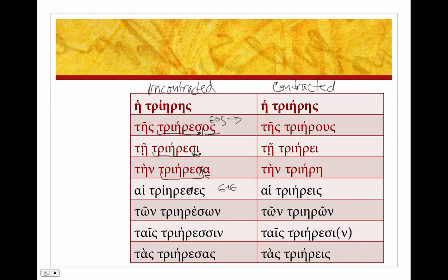For the genitive plural triereson: sigma drops out, and epsilon and omega contract to give us trieron. For the dative trieresi: only thing that happens is we don't need two sigmas, so one of those sigmas drops out, giving trieresi. For the accusative plural trieresos: sigma drops out, and epsilon and alpha contract — by analogy with the nominative plural — to give the result.